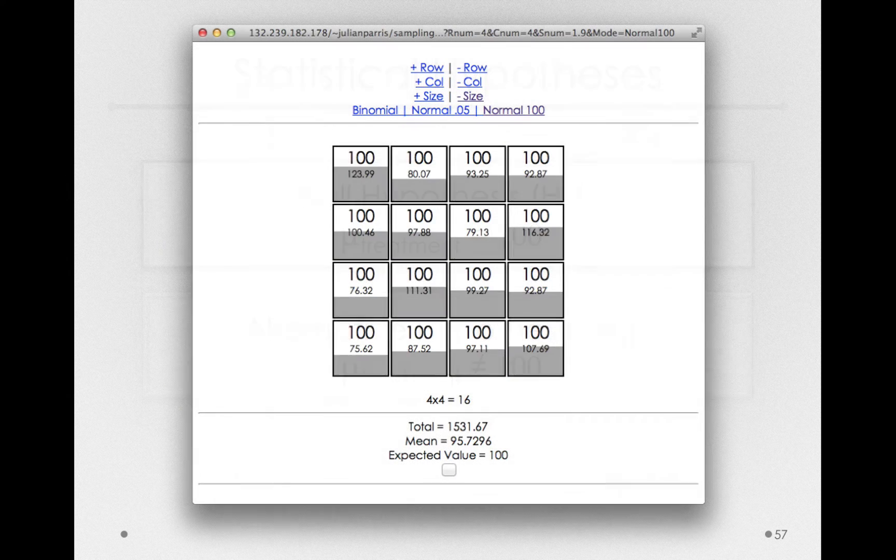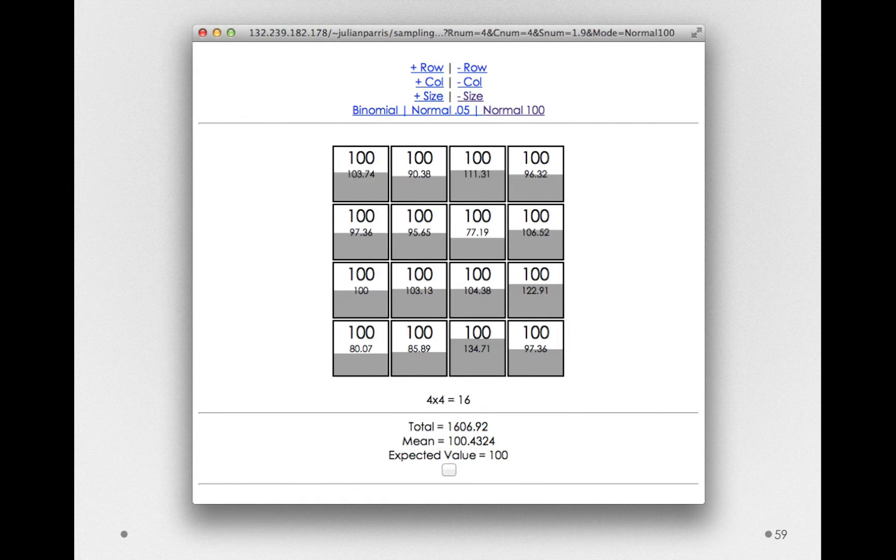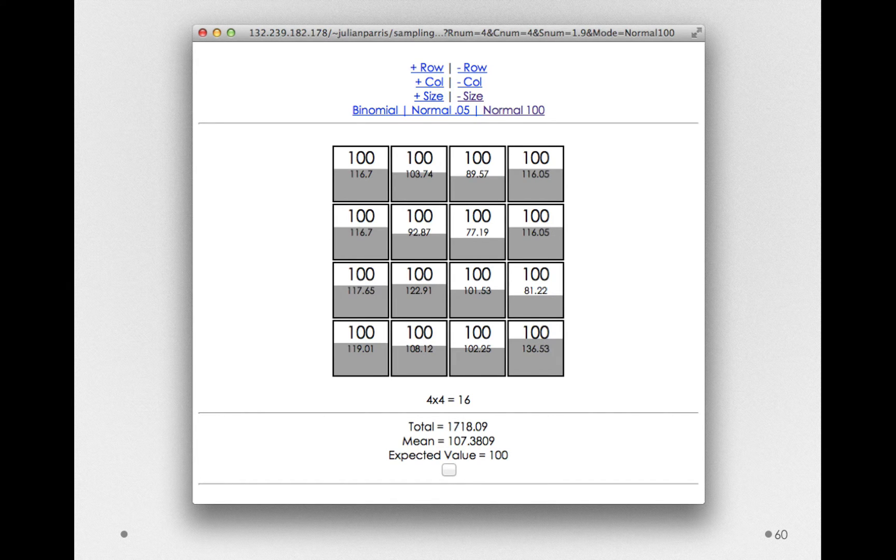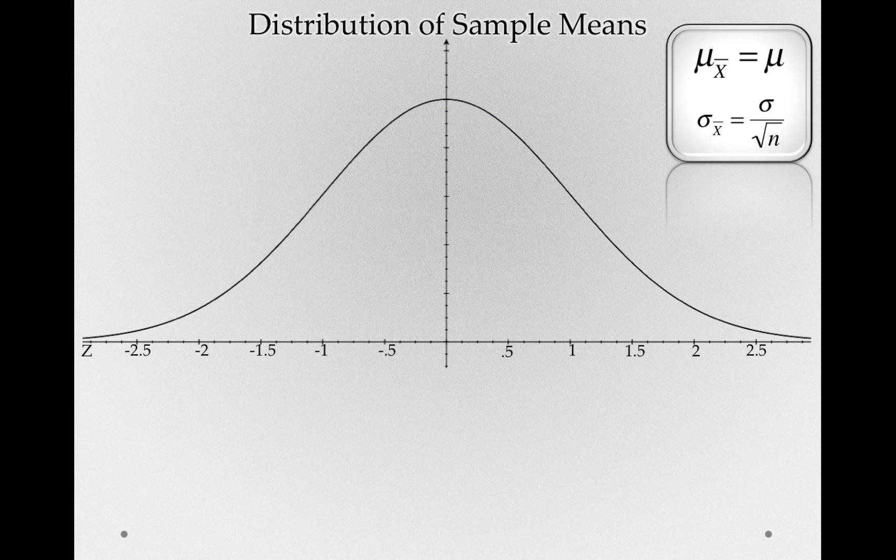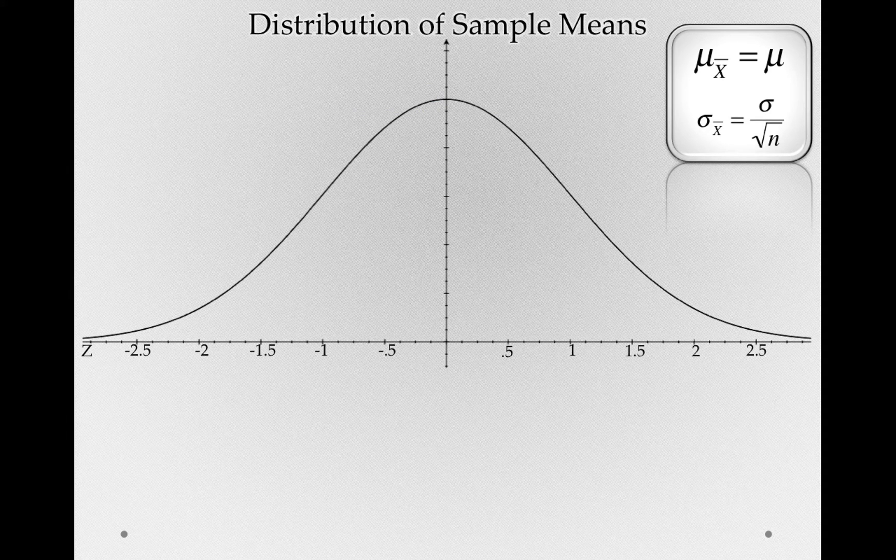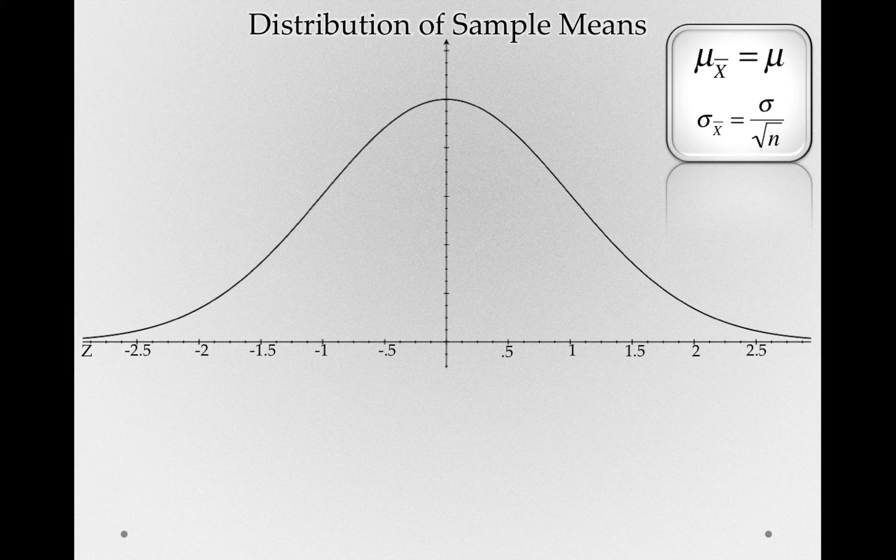We looked at this with our little sampling demonstrations. We saw what would happen if we stuck 16 people in a sample and just took their mean. In fact, this drew out our distribution of sample means. And without ever doing a sampling experiment, without ever making our sampling distributions,